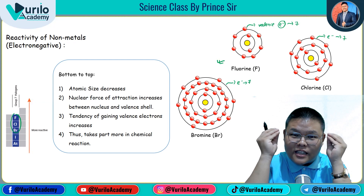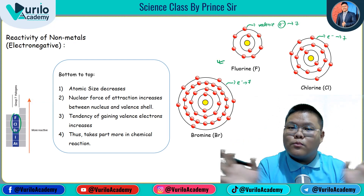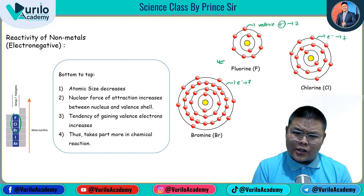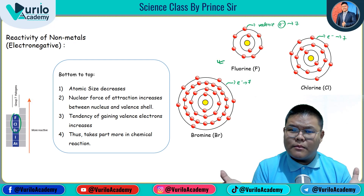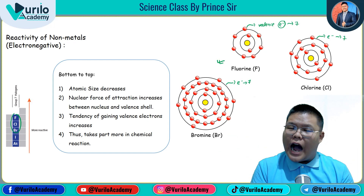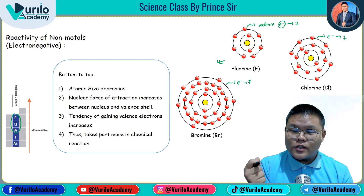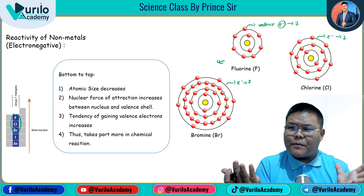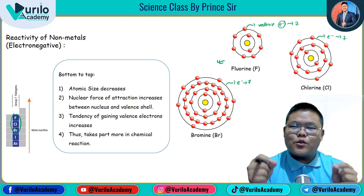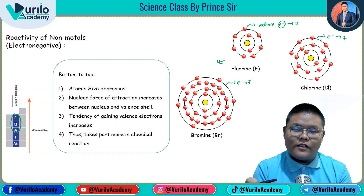Now, non-metals cannot lose 7 electrons. They don't want to be electropositive. Instead, they want to take one more electron to reach the octet state and be comfortable. They plan to take an electron from others — this type of thinking is negative thinking. That is why we call them electronegative, and this type of behavior is called electronegativity.